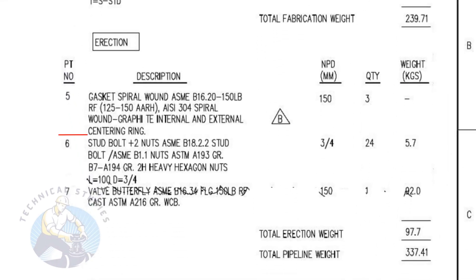Item number five is a spiral wound metallic raised face gasket. It has internal and external rings. The quantity is three numbers.